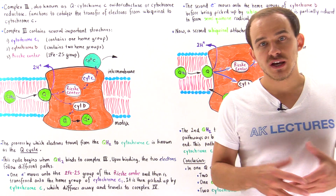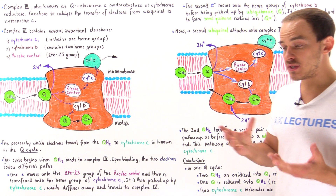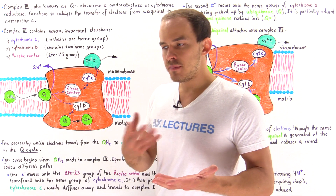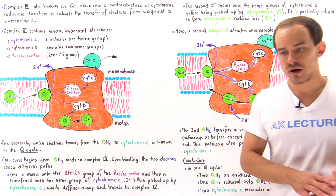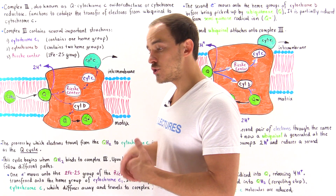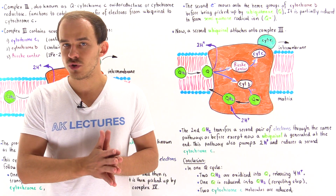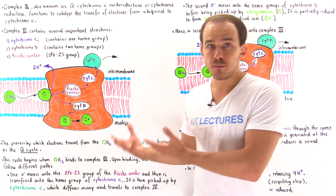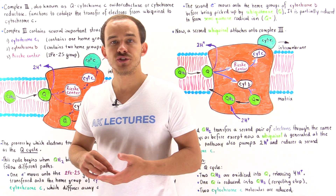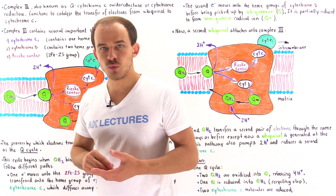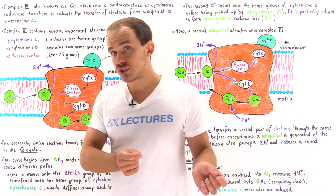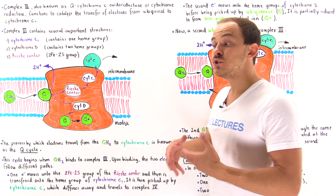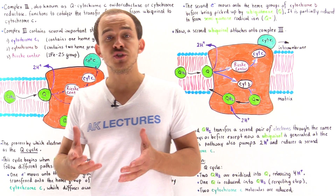Along the electron transport chain we have many complexes. As discussed previously, complex one picks up the high-energy electrons from NADH molecules and transfers those electrons onto a special carrier molecule known as ubiquinone. When ubiquinone grabs those electrons it is reduced into ubiquinol, given by QH2. Likewise, in complex two, the high-energy electrons from FADH2 molecules are also transferred onto ubiquinone to reduce it into ubiquinol.